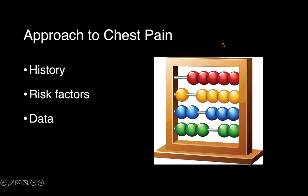My approach to chest pain centers around this tool here — which some of you are young enough you might not know what it is — but this is an abacus, which is an ancient counting device. Essentially, breaking down chest pain, we really want to look at three major things, three major boxes: the patient's history, their risk factors, and objective data. We'll go into detail on what each of those mean.